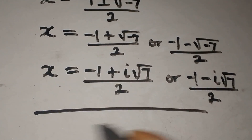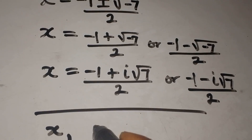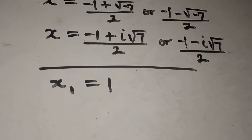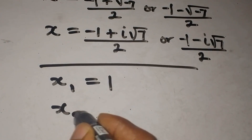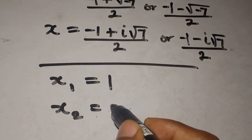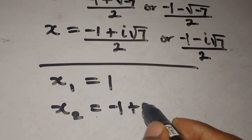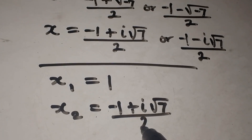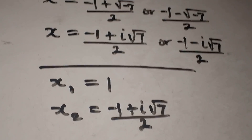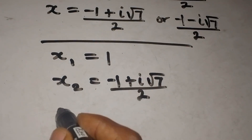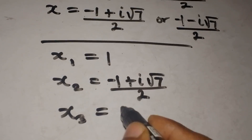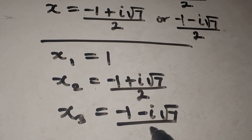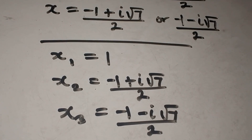Let's bring the three solutions together. x₁ equals 1 is the first solution. x₂ equals minus 1 plus i root 7, divided by 2. x₃ equals minus 1 minus i root 7, divided by 2. These are the three solutions to the equation.